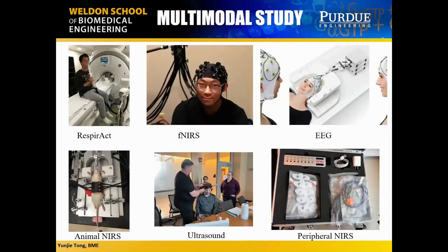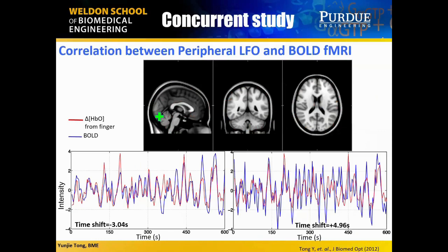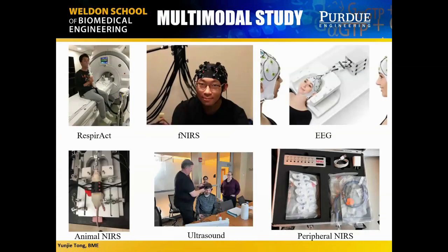I really appreciate Purdue because after I came here, I acquired many toys. I have a respiratory system so now, not only can we detect low-frequency oscillation, we can manipulate it by using mixed gas — I can give people different mixed gas and change their low-frequency oscillation to track it better. I have a NIRS system developed for animal, a NIRS system developed for periphery only. In addition, I acquired an EEG system for sleeping studies and an ultrasound system to understand blood flow directly. All these tools help us understand brain physiology better.